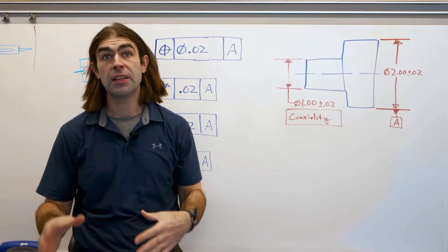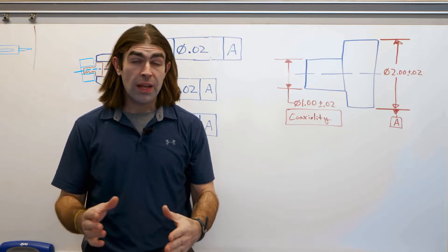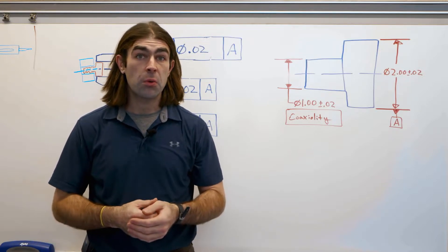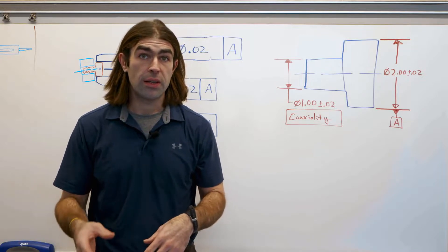In this video I'm going to talk about GD&T coaxiality tolerances. So when you have two diameters and you want them to be coaxial, there's a couple different ways to do it.